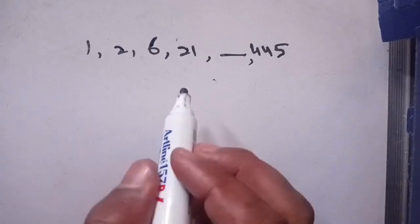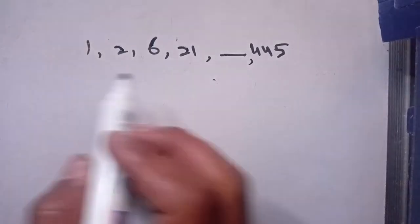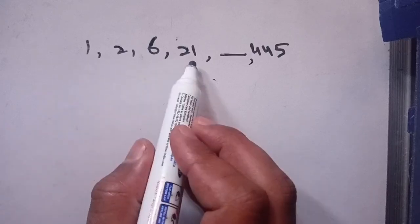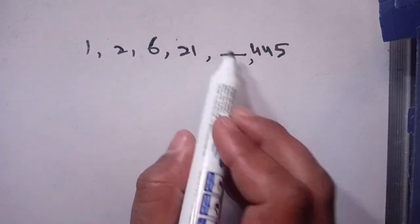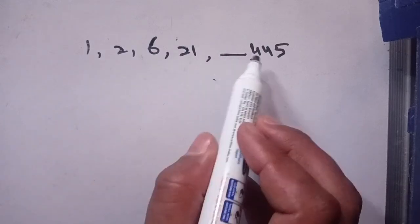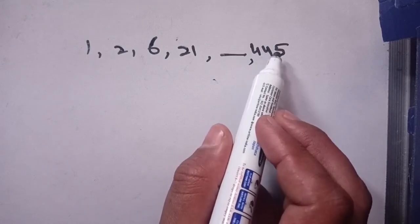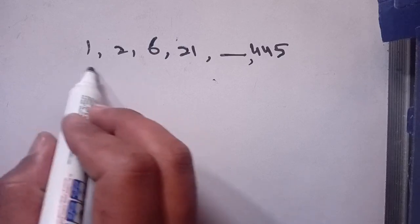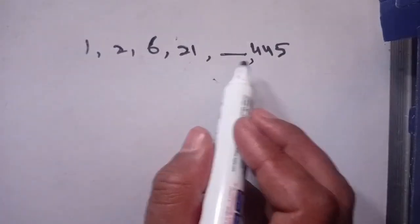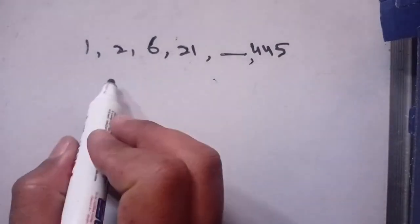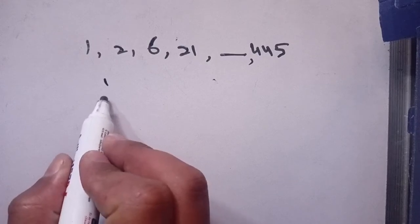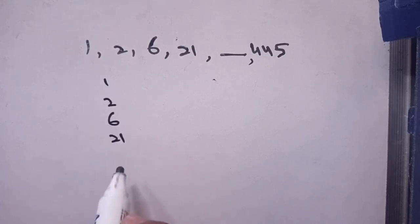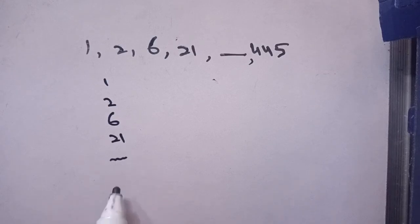In today's video, we are going to solve this missing number series. The series is 1, 2, 6, 21, and this term is missing. We have to find it, and the last term is 445. First, we make a pattern between these terms so that we can find the missing term. The first term is 1, second is 2, third is 6, fourth is 21, fifth is what we need to find, and the sixth term is 445.